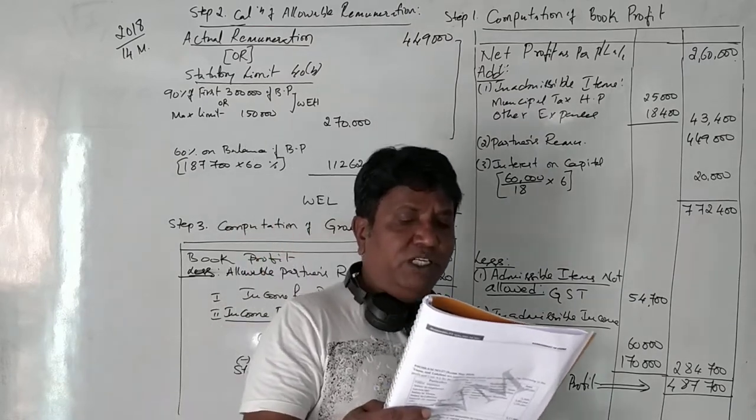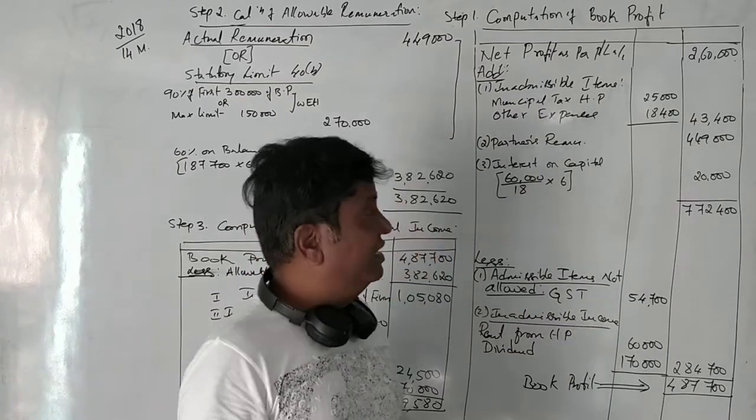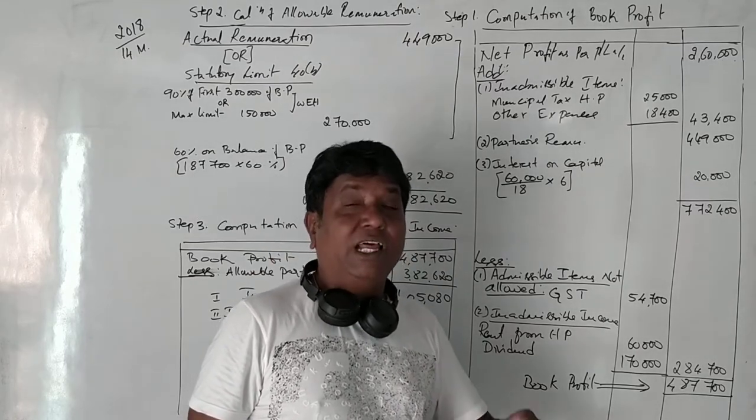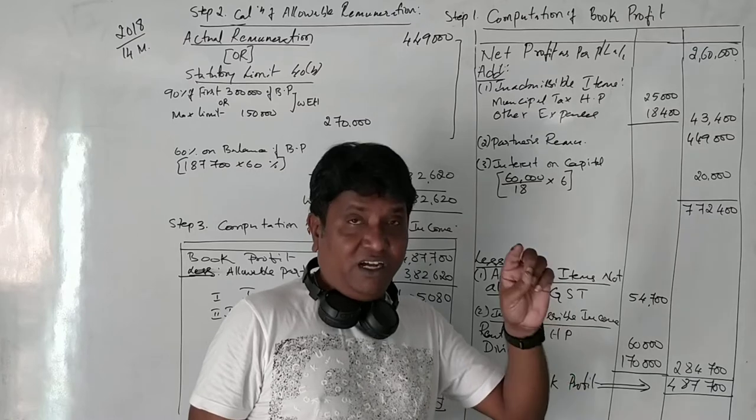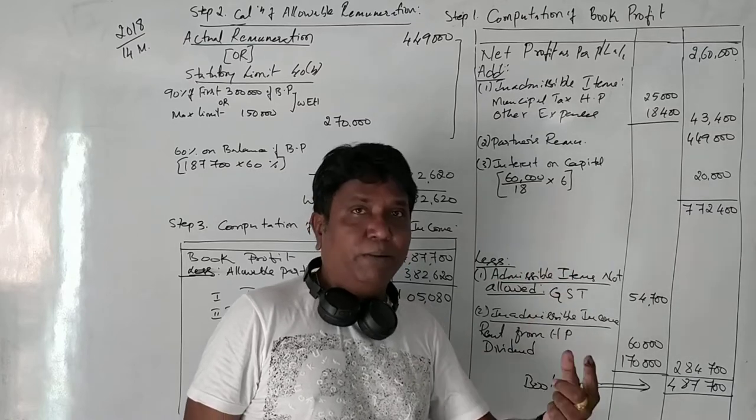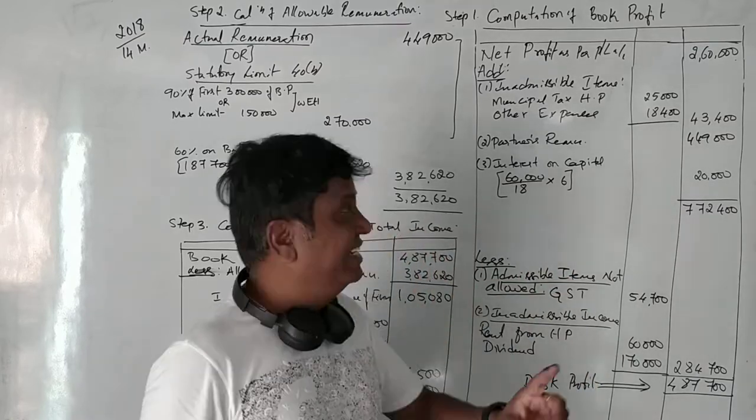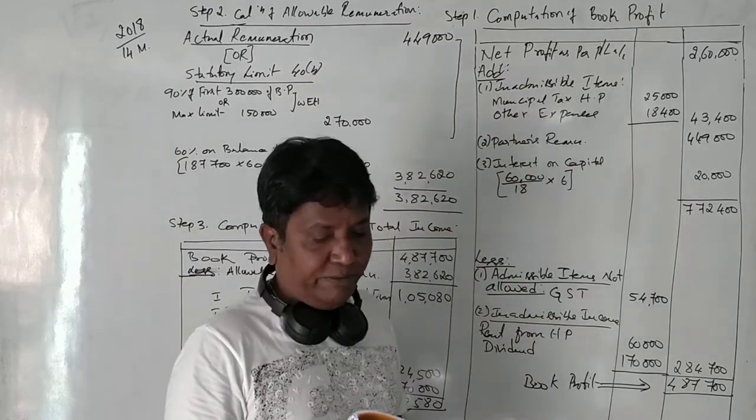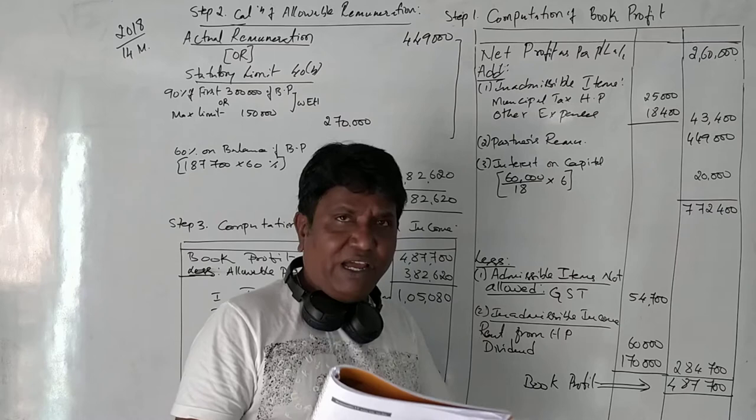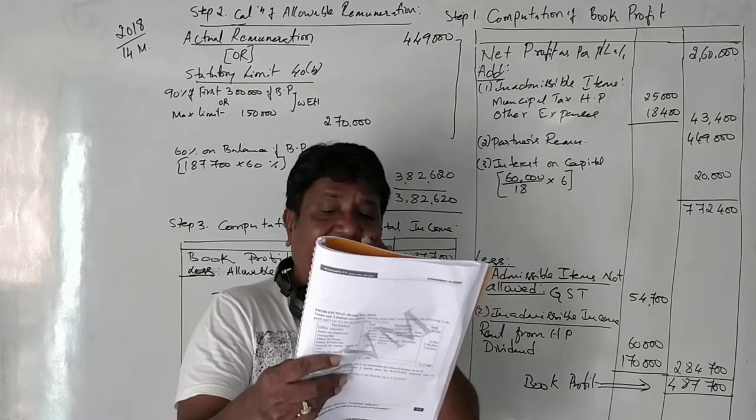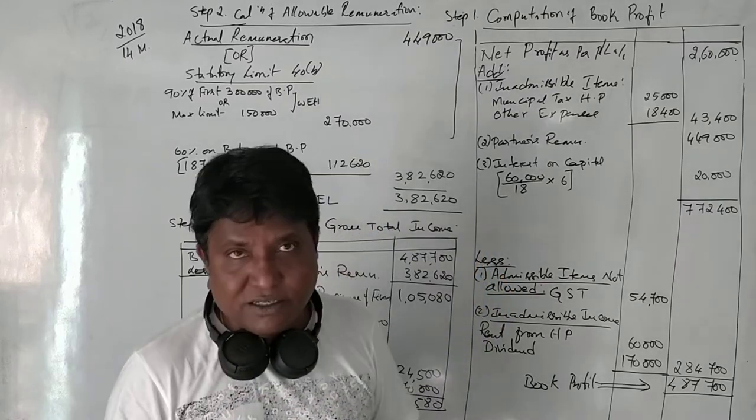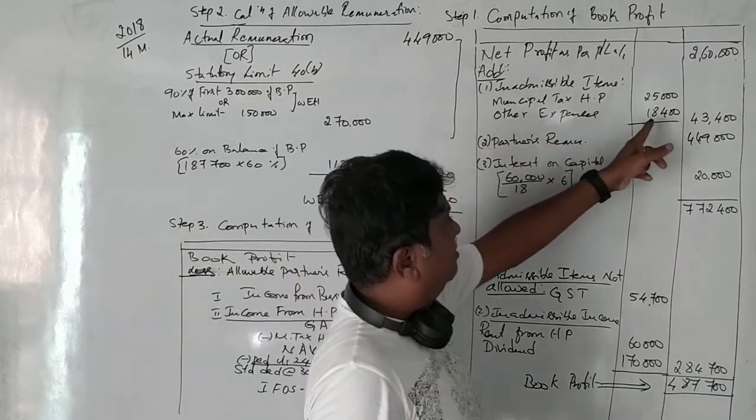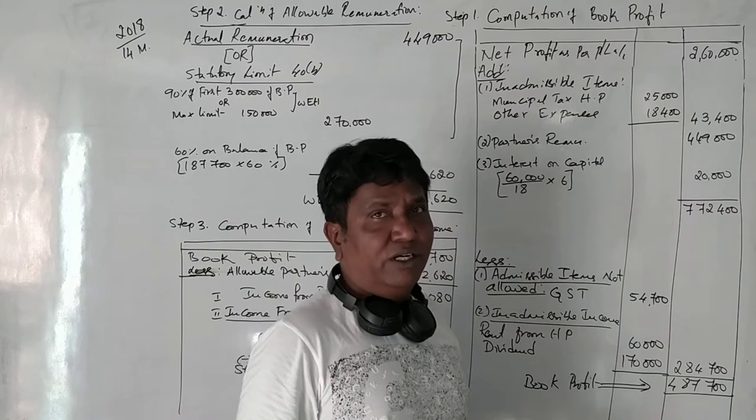Next is municipal taxes of house property. Municipal taxes paying on house property is allowable as a deduction under the head income from house property but not from the business. Therefore, it is an inadmissible item of 25,000. Other expenses, we have an adjustment. Out of other expenses, 18,400 is not deductible under section 36, 38, 1. So which is not deductible. Therefore, 18,400 rupees have taken.